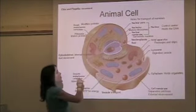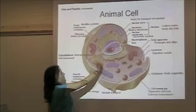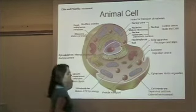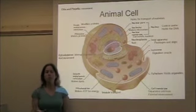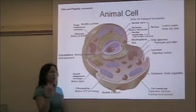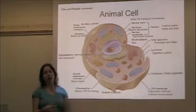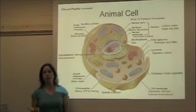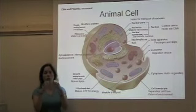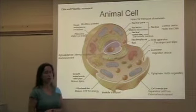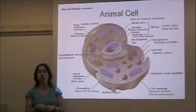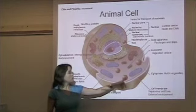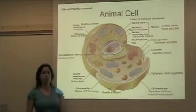Both the rough ER and the smooth ER will transport their fats and proteins over to the Golgi apparatus, sometimes also called the Golgi bodies. The purpose of the Golgi is to package and ship out the products to other organelles in the cell. I always think of the Golgi bodies as UPS — all the molecules go there, they're packaged up, and shipped out to their final destination. The structure that does the shipping, like a UPS truck, is called the vesicle, which carries molecules from one location in the cell to another.